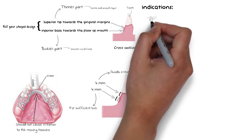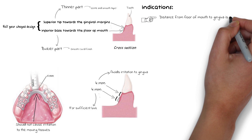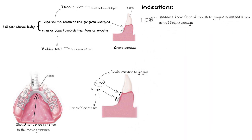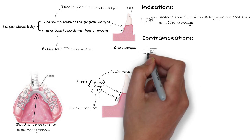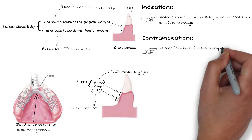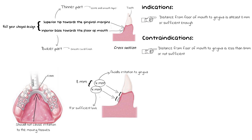A major indication for the lingual bar is when the distance from the gingiva to the floor of the mouth is at least 8 mm — 4 mm for the clearance between the superior border and the gingival margins, and 4 mm for the vertical height of the bar itself. If less than 8 mm of space exists, the lingual bar is contraindicated, as it may either irritate the gingiva or lack adequate bulk and strength.